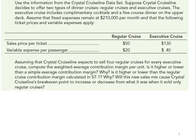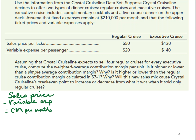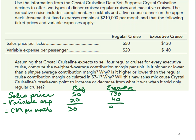First, we calculate our contribution margin per unit by taking our sales price and subtracting variable costs per unit. For the regular cruise, the sales price is $50 and variable cost is $20, giving us a $30 contribution margin per unit. The executive cruise costs $130 with a $40 variable cost, so they make $90 in contribution margin for each executive cruise sold.